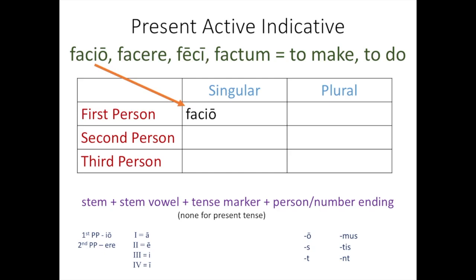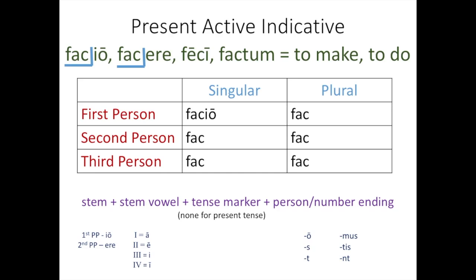To do the other five forms, you need to follow our equation at the bottom of the screen. First, you find your stem. And to do that, you remove the IO from the first principal part or the ERE from the second principal part. So that leaves you with FAC, F-A-C. And then you add your stem vowel. For third IO, it's a short I. And then you add your person and number ending. So O, S, T, M, U, S, T, I, S, N, T.